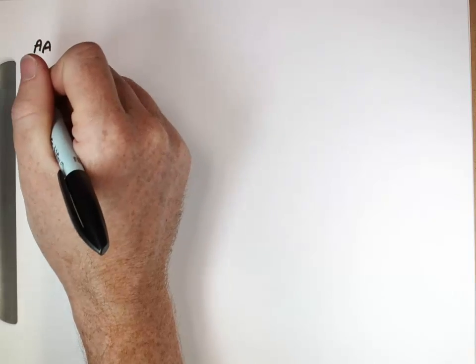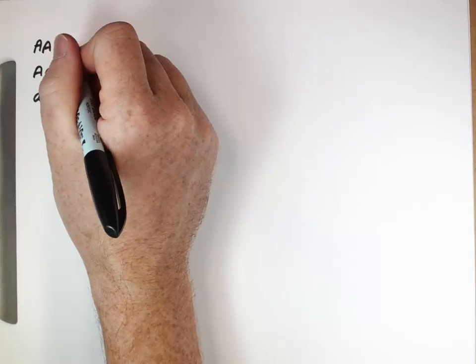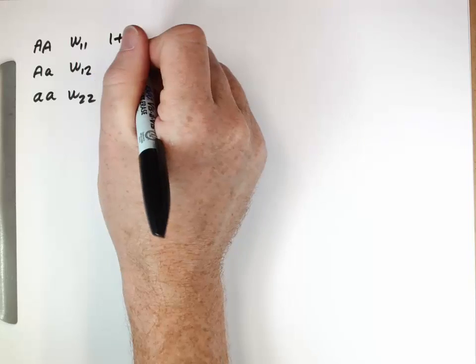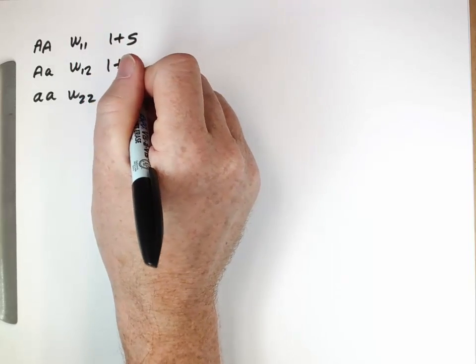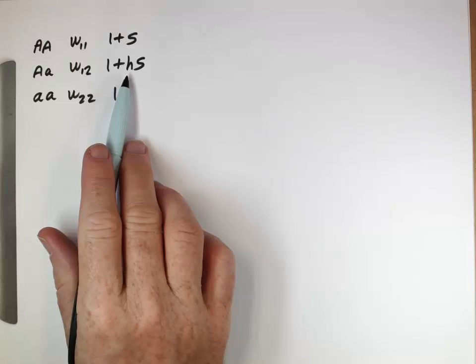So let's think about a situation in which we're thinking about our three genotypes with their fitnesses W11, W12, W22. And we're going to represent these fitnesses as 1+s, 1+hs, and 1. So here the capital A allele is advantageous relative to the lowercase a allele, and whether it's dominant, codominant, or recessive depends on what the value of that h is.